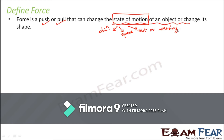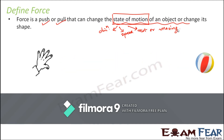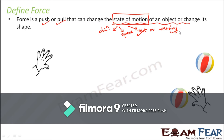Whenever a force is applied, it is capable of changing the state of motion. If an object is at rest, force can make it move. If an object is moving, force can make it come to rest. For example, when a ball is moving, its state of motion is 'moving.' When you apply force to stop it, its state changes to 'rest.' Similarly, when you apply force on a car's accelerator, the car's speed increases — its state of motion changes from slower to faster.